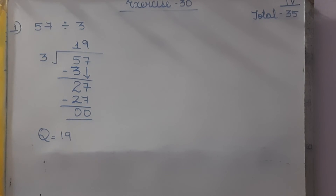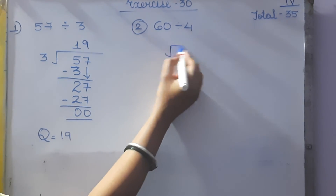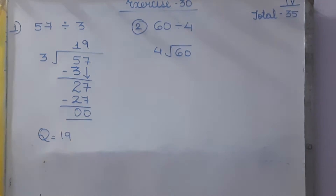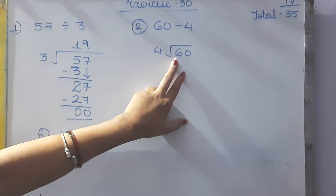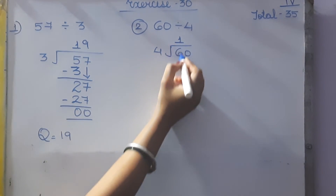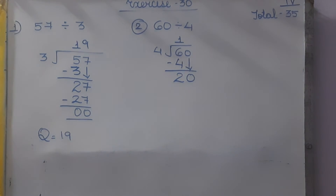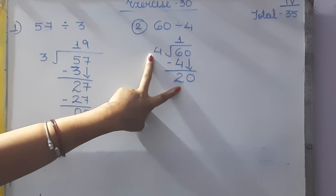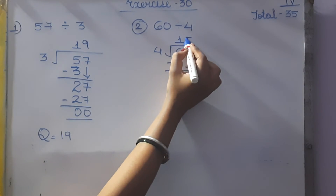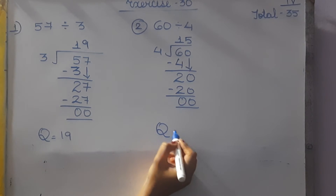Next: 60 divided by 4. In the table of 4, does 6 come? 4 ones are 4, 4 twos are 8 — 8 is bigger than 6. So we take the smaller number: 4 ones are 4. So 6 minus 4 is 2. Bring down 0. In the table of 4, 4 fives are 20, so 20 minus 20 is 0. The quotient is 15.